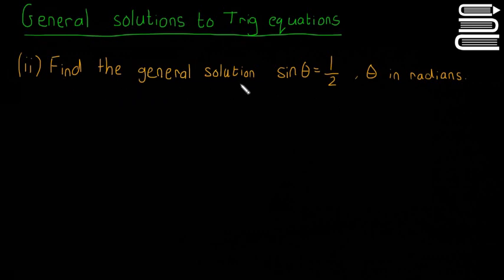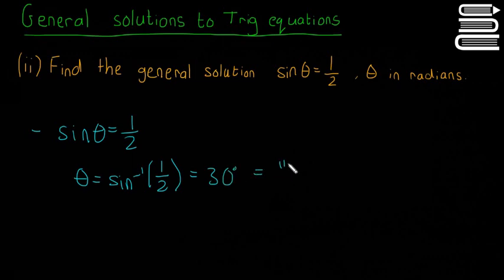So I'll go straight ahead. Find the general solution to sine theta equals one-half. So we'll start with the first step in the method. So I'll write sine theta equals one-half. And that means theta equals the inverse sine of one-half. Pop that into your calculator and you'll find that theta equals 30 degrees. And also that it's equal to pi over 6 radians.